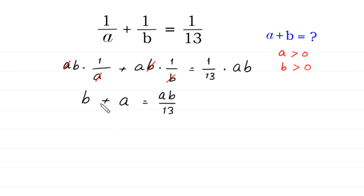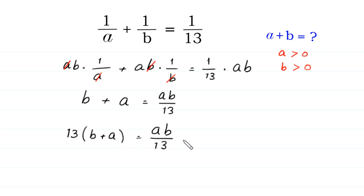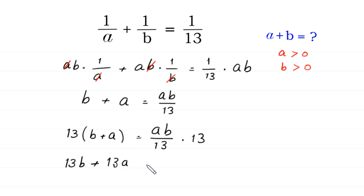Now, from here we multiply both sides by 13. So 13 times B plus 13 times A is equal to AB over 13 times 13. The 13s cancel on the right side, leaving AB.